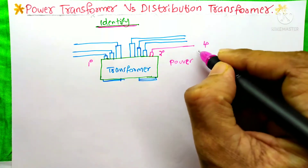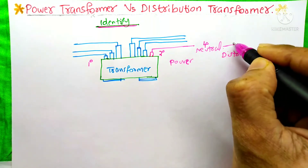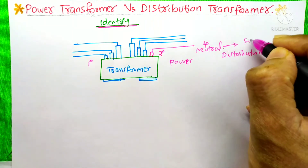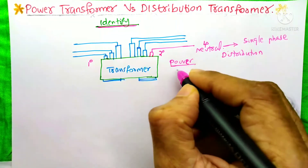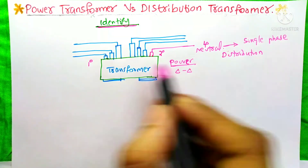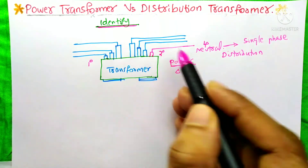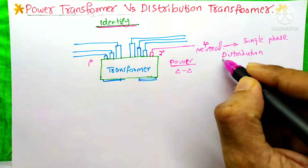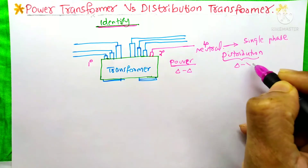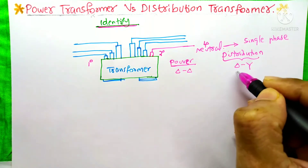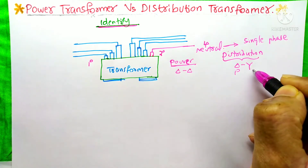This fourth conductor is the neutral, and this neutral is used for single-phase loads. The power transformer is always delta-delta configuration — three conductors on the primary and three conductors on the secondary side. The distribution transformer is always delta-Y — three conductors on the primary side and four wires on the secondary side.